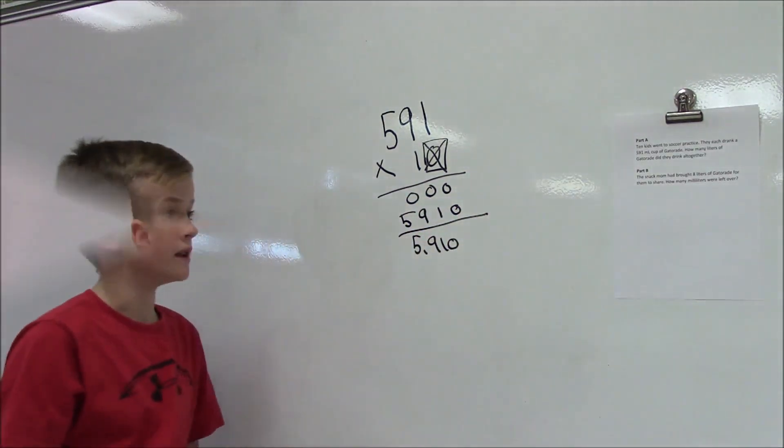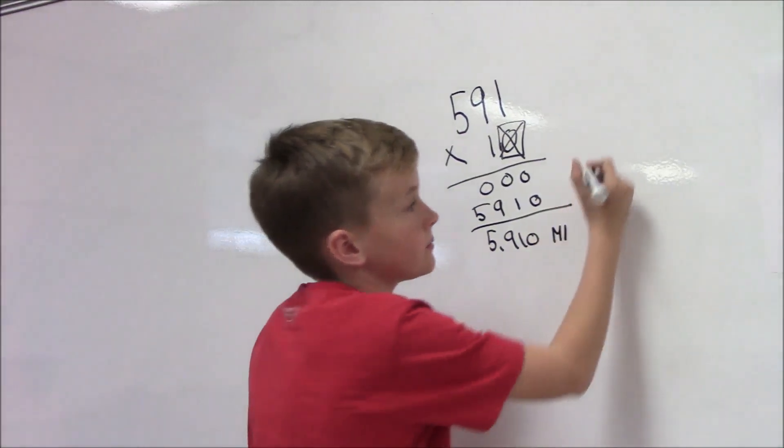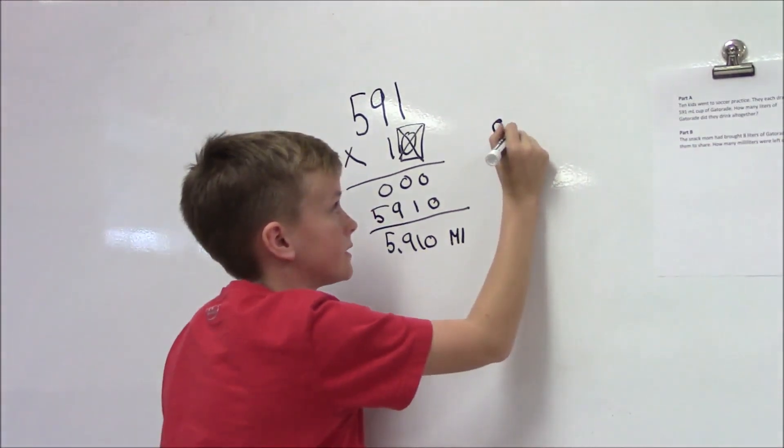Now we're going to do part B. We know that 1 liter equals 1,000 milliliters, so that means that 8 liters equals 8,000 milliliters.